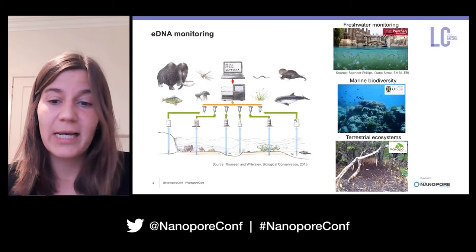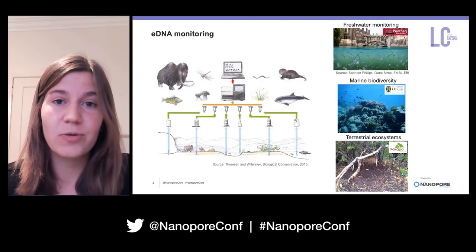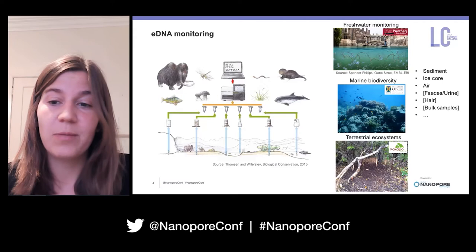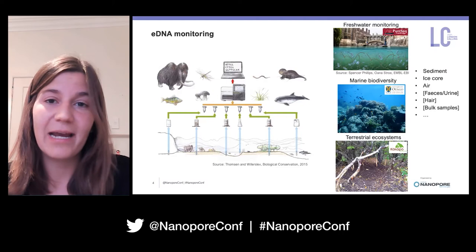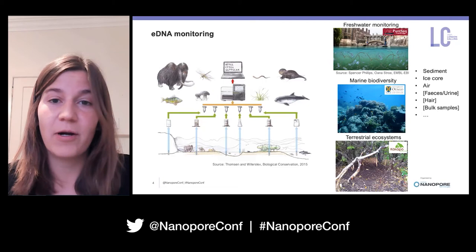We also probed soil samples to monitor a critically endangered flightless bird species. Other materials that can be used include sediment, ice core, air, feces, urine, hair, or macroinvertebrate bulk samples — though the last ones are often not referred to as eDNA studies, since there is some obvious sign of the biological source material available.